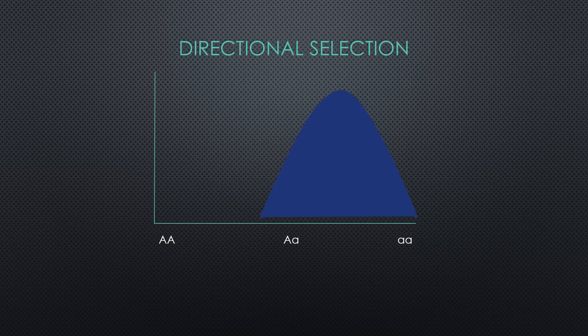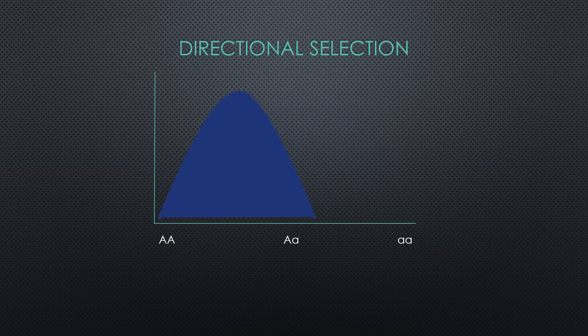However, if big A big A was selected for, the opposite would be true, with more big A big A than big A little a or little a little a individuals and more big A alleles.